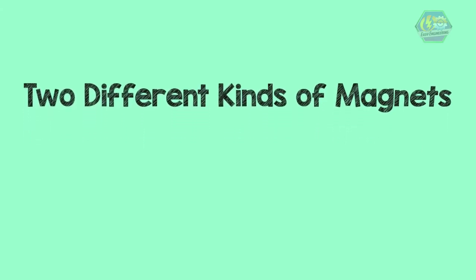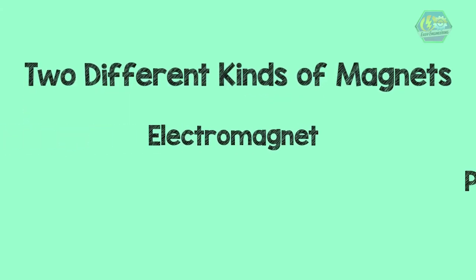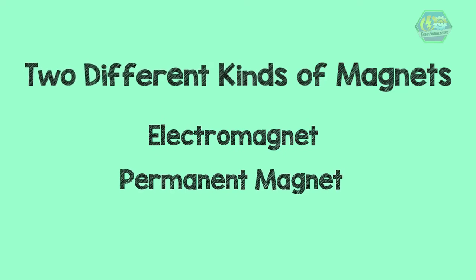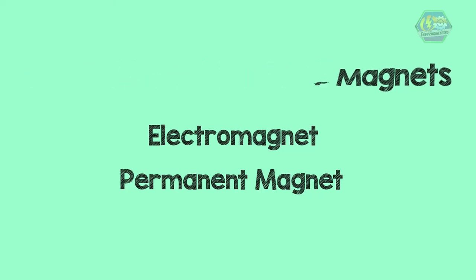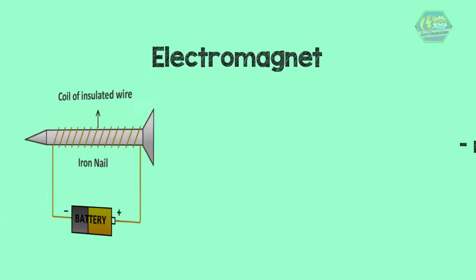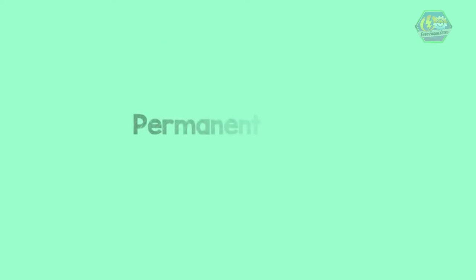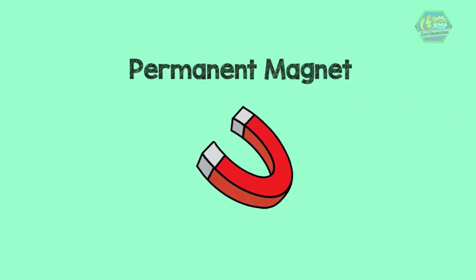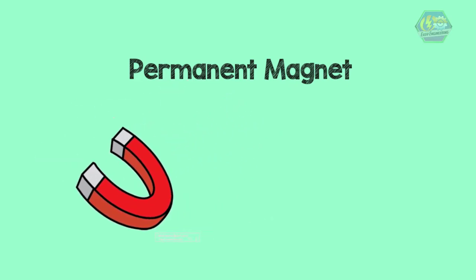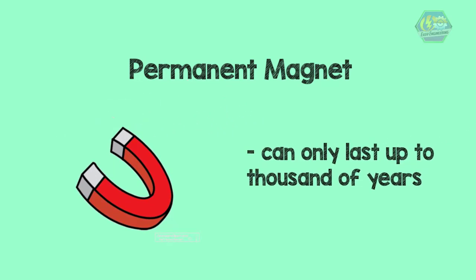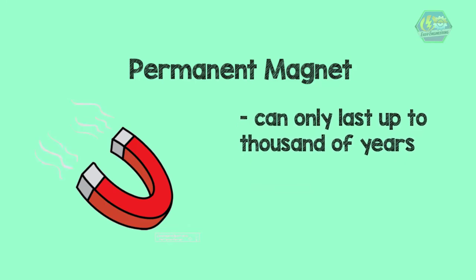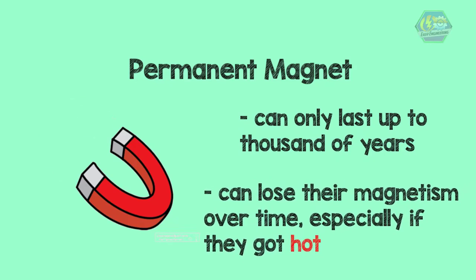There are two different kinds of magnets: an electromagnet and a permanent magnet. They may be quite different from each other, but these magnets are caused by the same thing. An electromagnet is a magnet created by electricity. The other kind is called the permanent magnet because people thought it would last forever. In reality, permanent magnets can only last up to thousands of years, but they can also lose their magnetism over time, especially if they get hot.